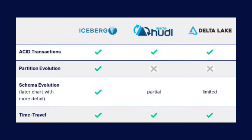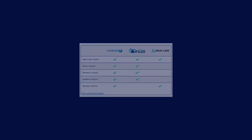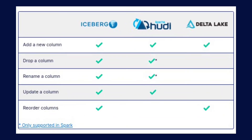We take a look at their feature set, which includes things like asset transactions, partition evolution, schema evolution, and time travel, and then take deep dives into those features, such as schema evolution.